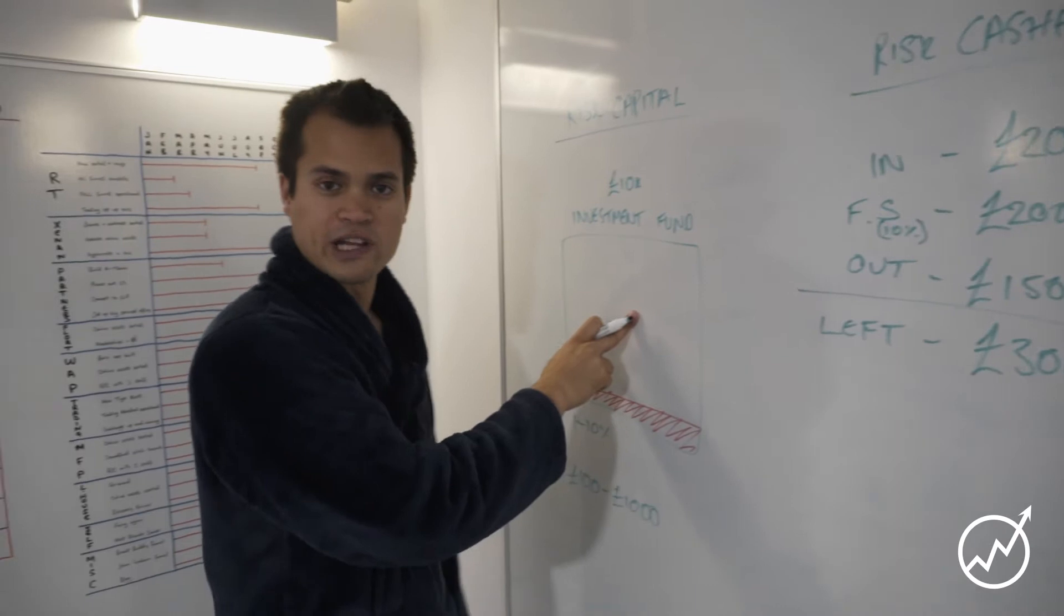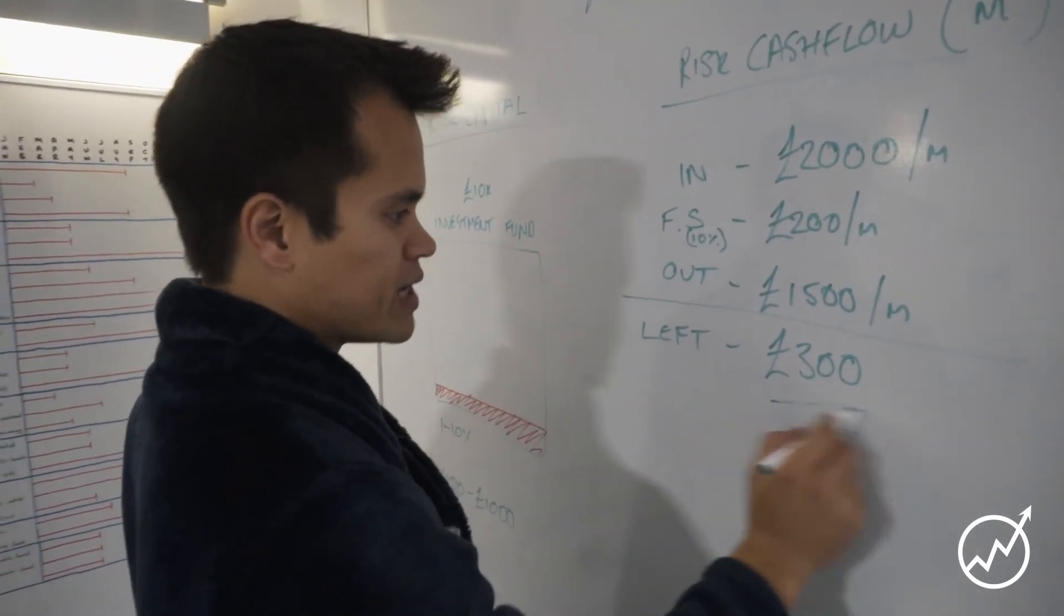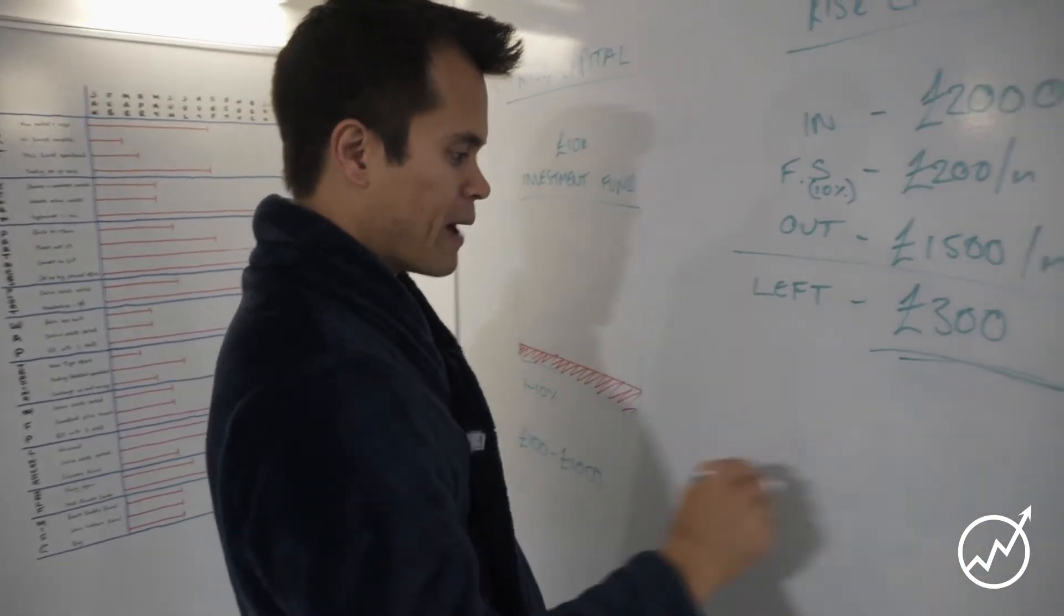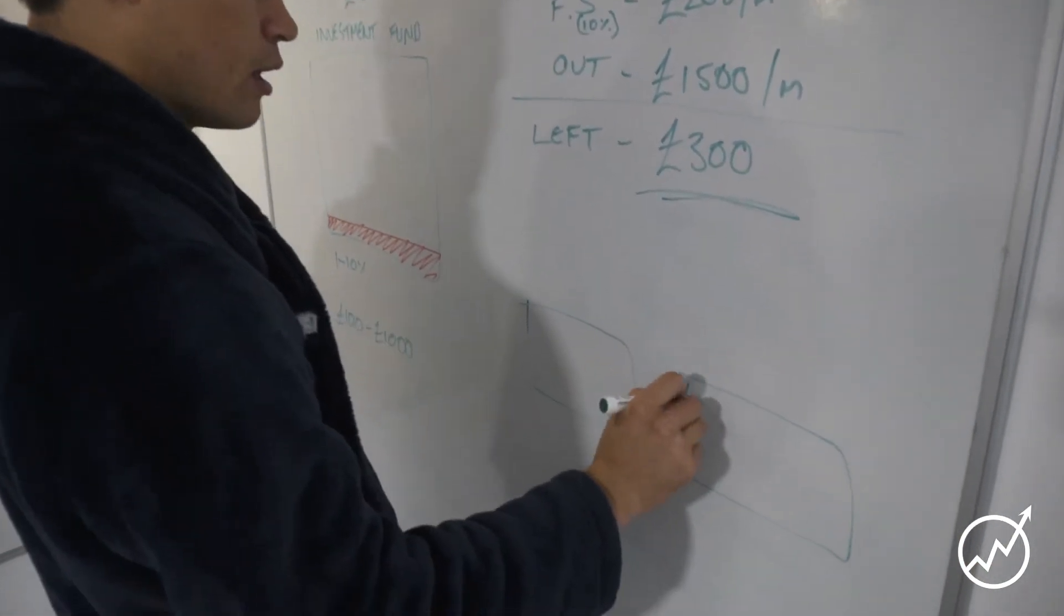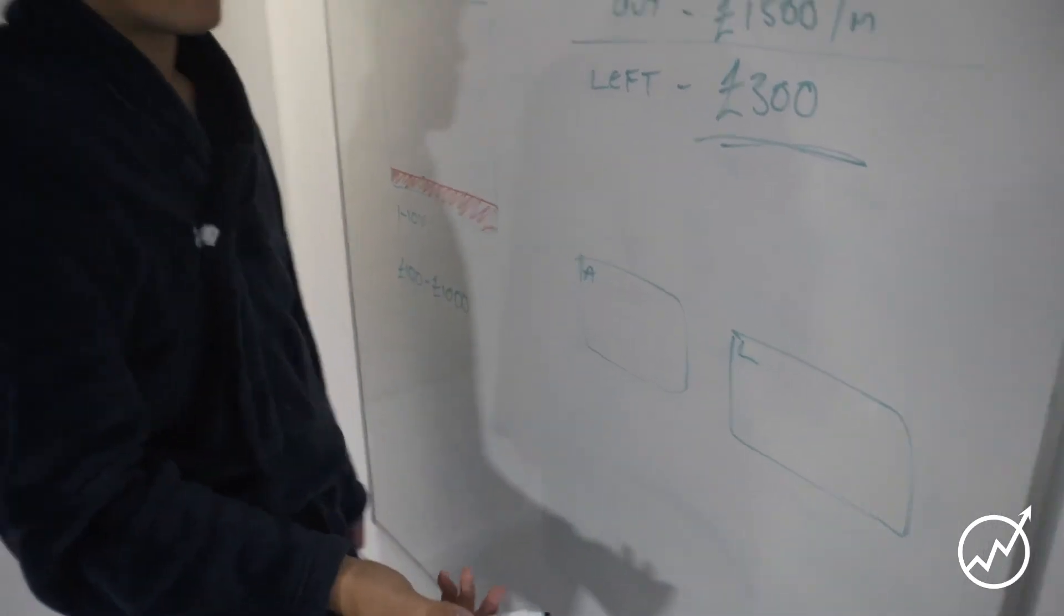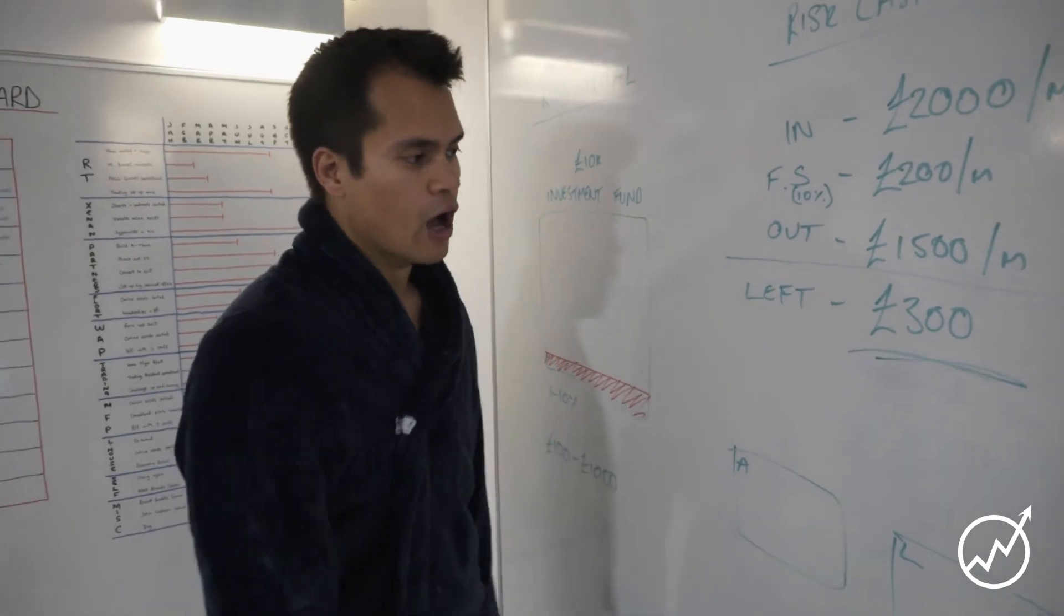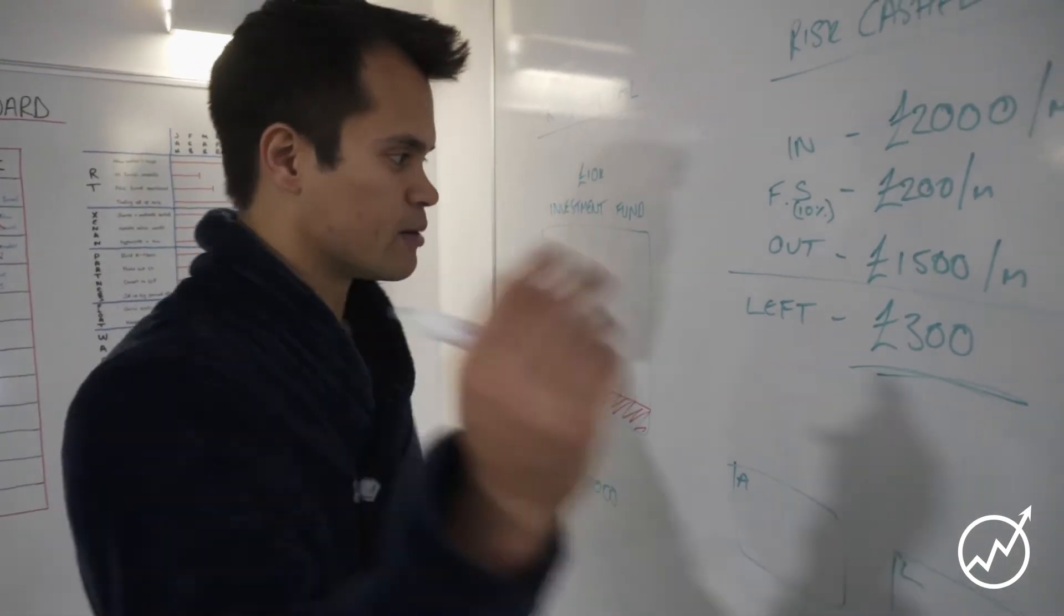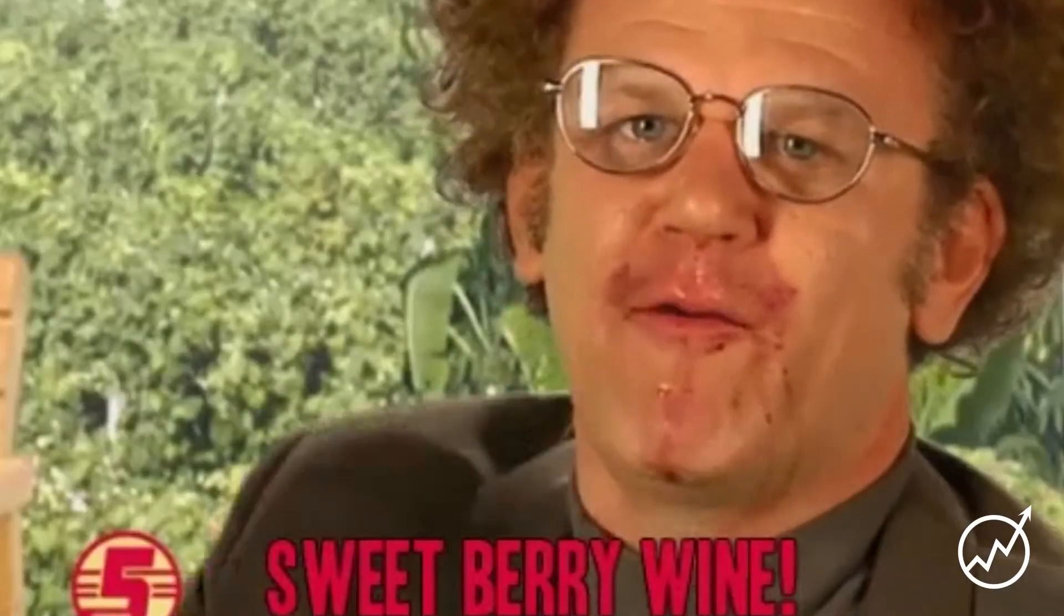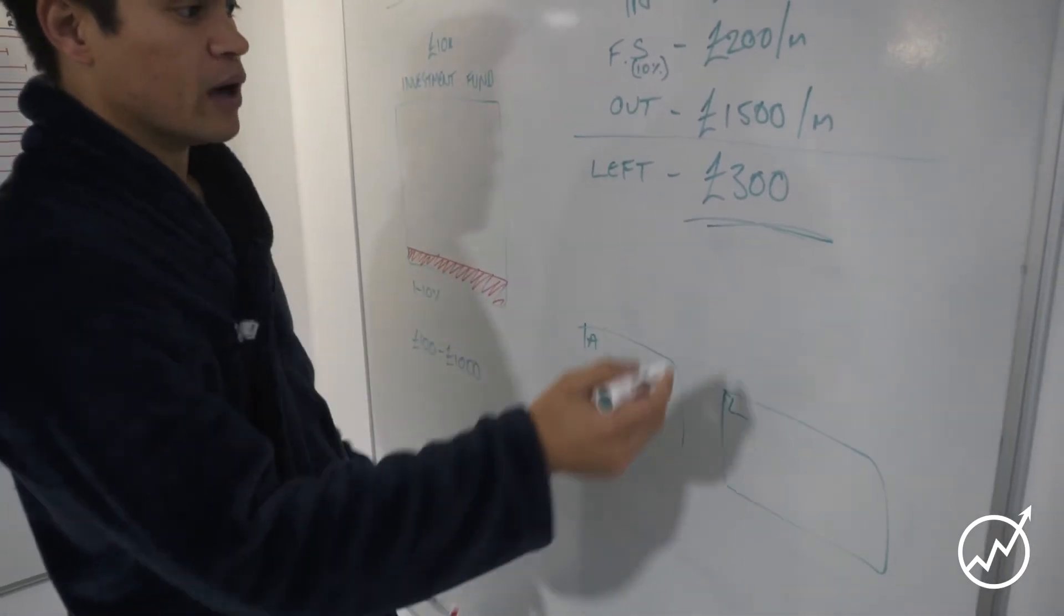So what this means, what's left is 300 pounds. So that way your savings are out there and that savings basically goes into your investment fund. So you're then left with 300 quid. Now looking at your balance sheet, let's say you have your asset box and liability box.